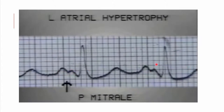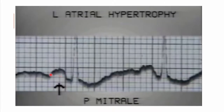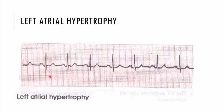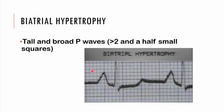Here are examples of P mitrale — a notched, broad P wave indicating left atrial hypertrophy. Sometimes you may get biatrial hypertrophy, where the P waves are both tall, notched, and broad. In biatrial hypertrophy, they are taller than two and a half small squares and also broader than two and a half small squares.